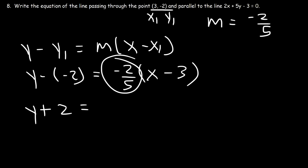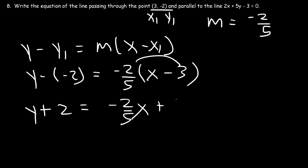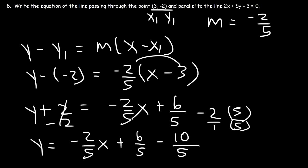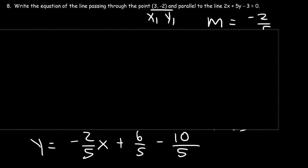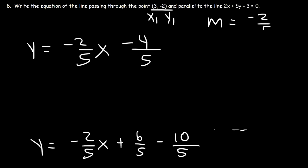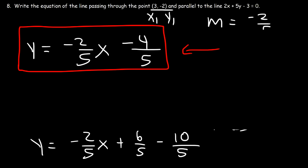Distribute negative 2/5 to (x minus 3): negative 2/5 times negative 3 is 6/5. So y plus 2 equals negative 2/5 x plus 6/5. Subtract 2 from both sides — converting 2 to 10/5 for common denominators — so 6/5 minus 10/5 is negative 4/5. The final equation in slope-intercept form is y equals negative 2/5 x minus 4/5.